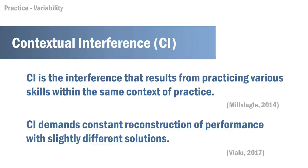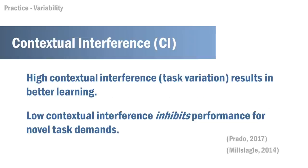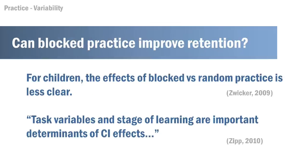Contextual interference is a term that describes this random practice — it's the interference resulting from practicing various skills within the same session. Alternating from one task to another and back demands constant restructuring of performance with slightly different solutions each time. This problem-solving is valuable for long-term retention and generalization. High contextual interference results in better learning, while low CI actually inhibits performance for novel task demands. The Pareto 2017 research was with individuals with cerebral palsy performing a computer maze, and random practice led to better performance on transfer tests.